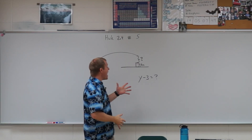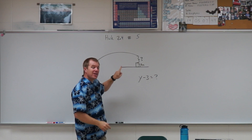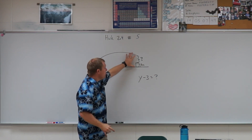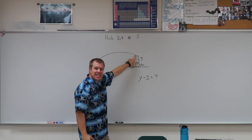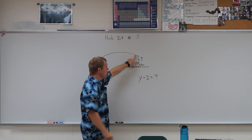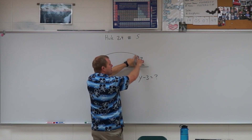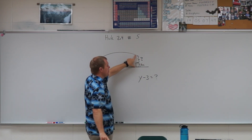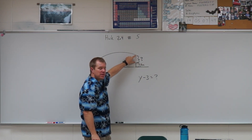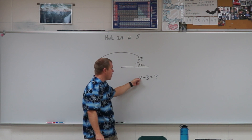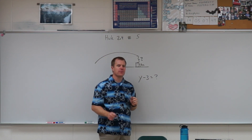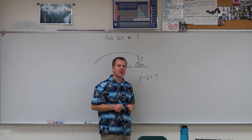Here's your hint for number five — here's something that gets people. You find the height when it reaches this point, you find that y value, but they want to know how high above the fence it's going to be. So you take that y value you find and you subtract off three. There's your hint.